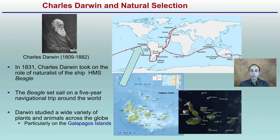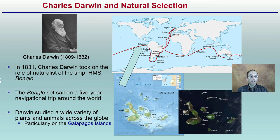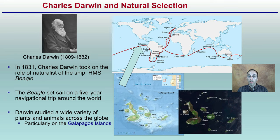Charles Darwin came up with the idea of natural selection. In 1831, Darwin took the role of naturalist on the ship HMS Beagle and sailed on a five-year navigational trip around the world. He studied a wide variety of plants and animals across the globe, but of particular importance were his studies in the Galapagos Islands, located here. They are different sizes in a small cluster, pretty far off any large mainland, which allows some very unique things to develop there.